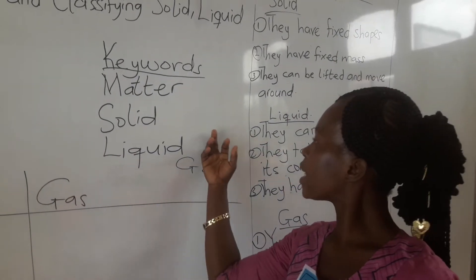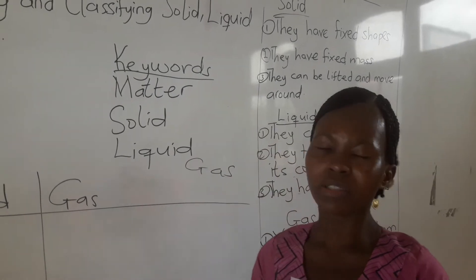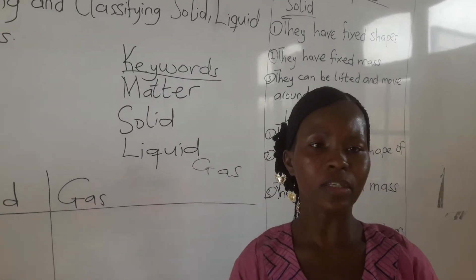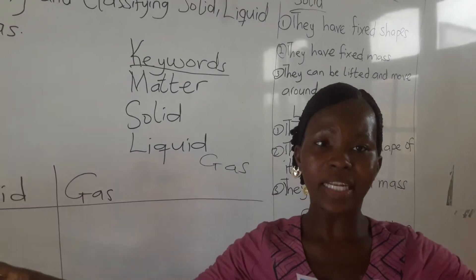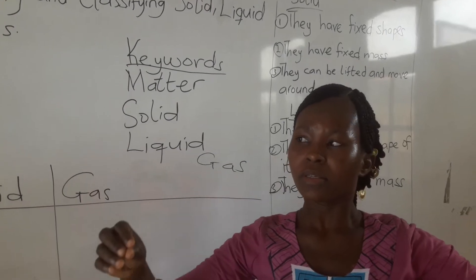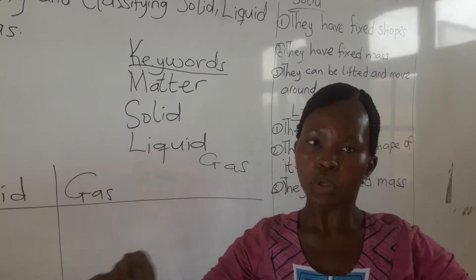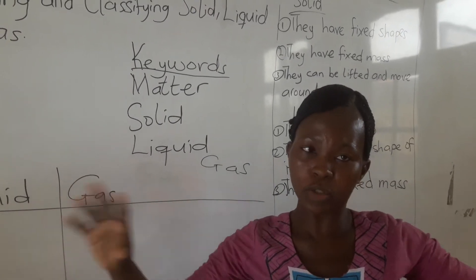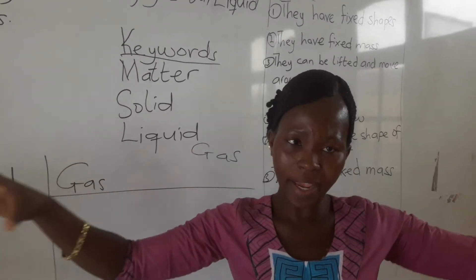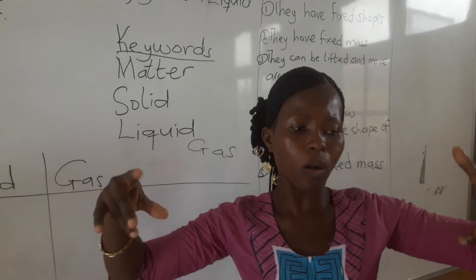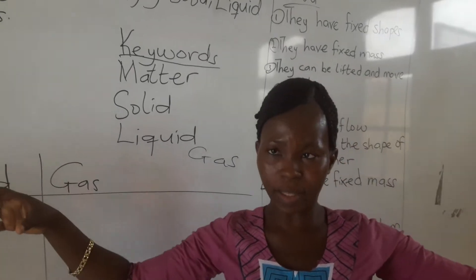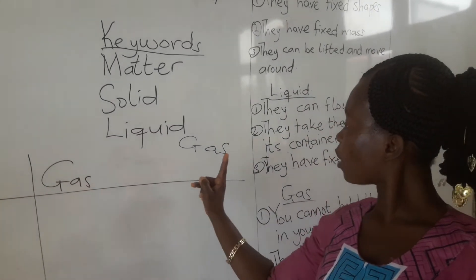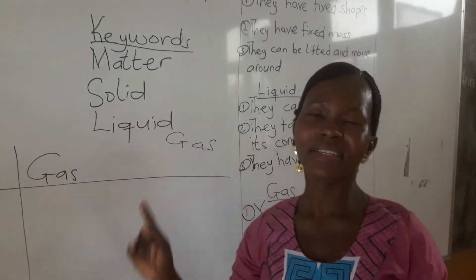And liquid are other substances whose particles are widely joined together — they are not closely joined. They are widely or separated. And we also have gas.